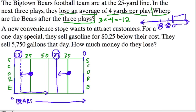Up next, we've got this one. A new convenience store wants to attract customers. For a one-day special, they sell gasoline at 25 cents below their cost. They sell 5,750 gallons a day. How much money do they lose? Well, how do we model this?